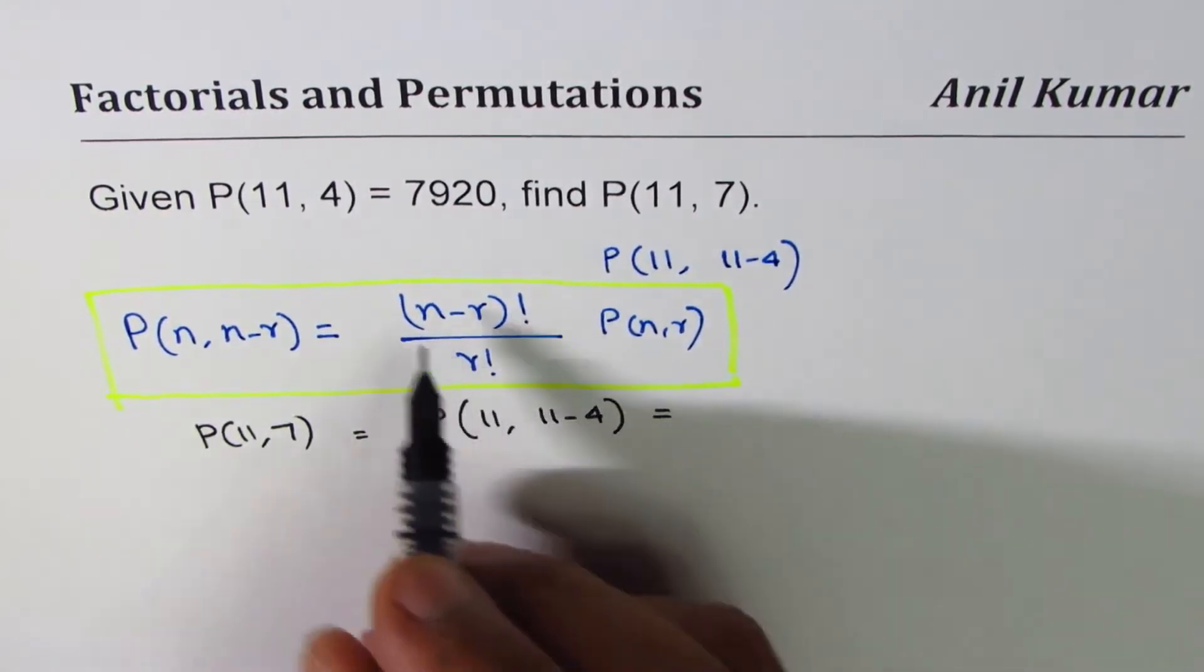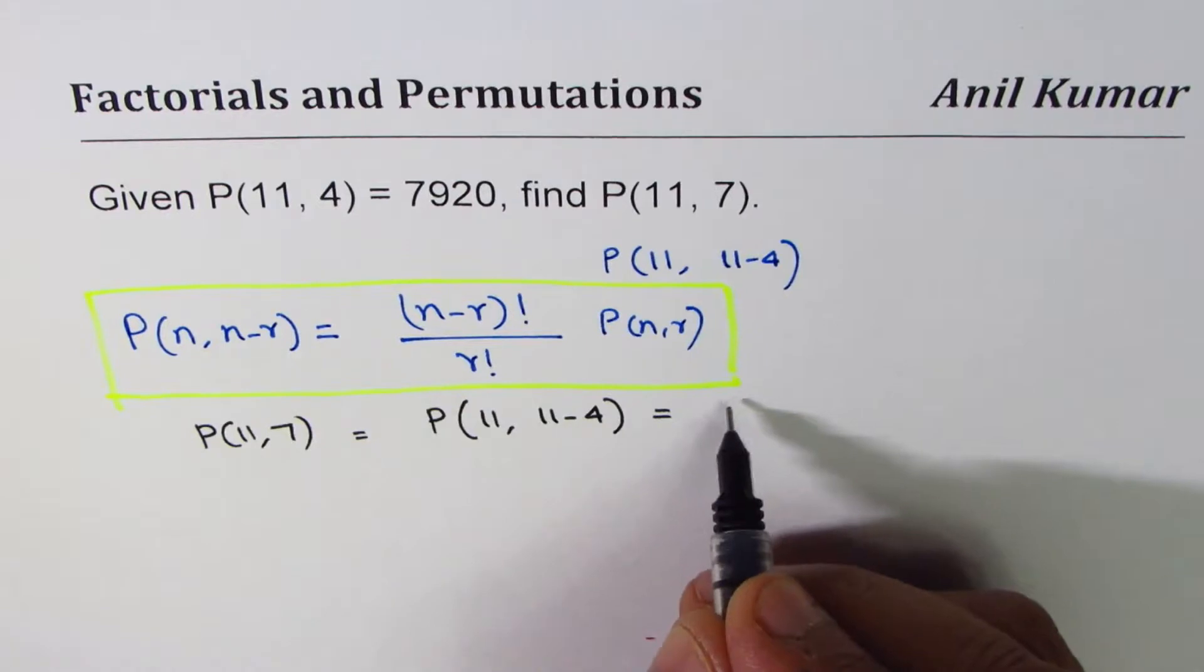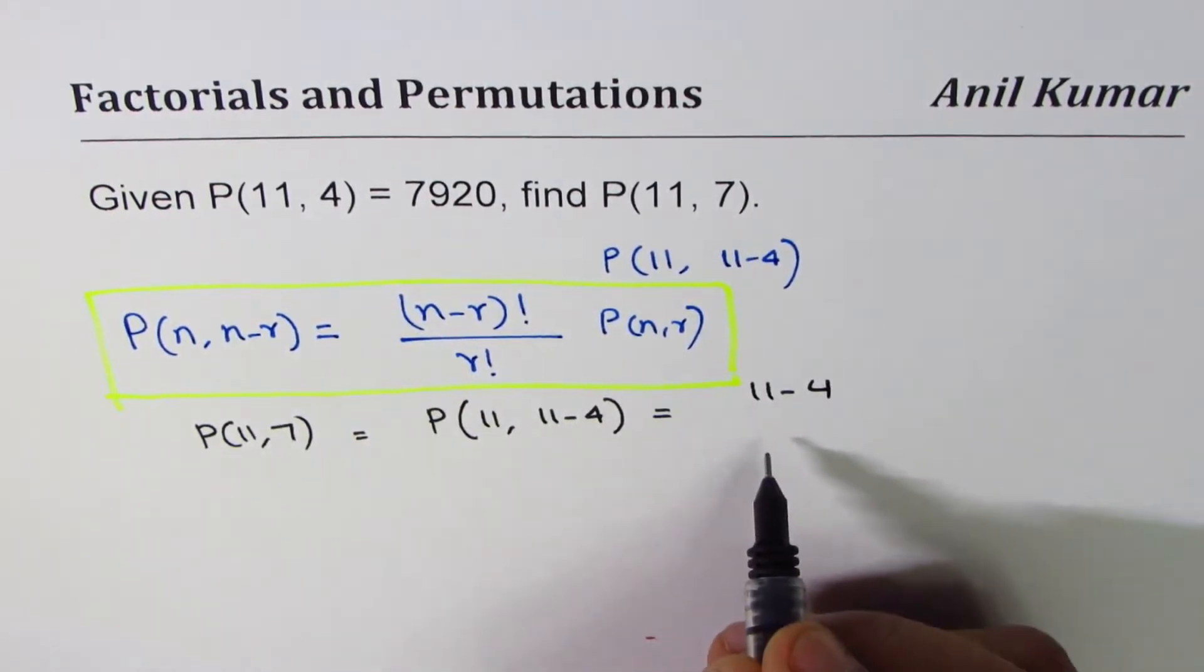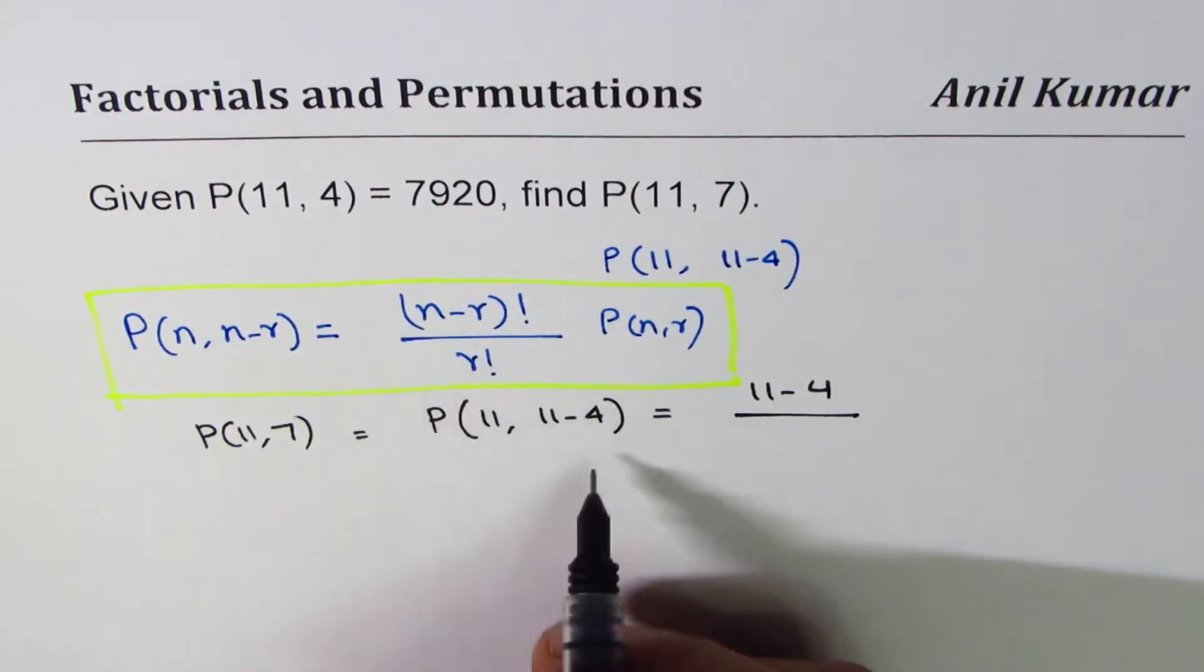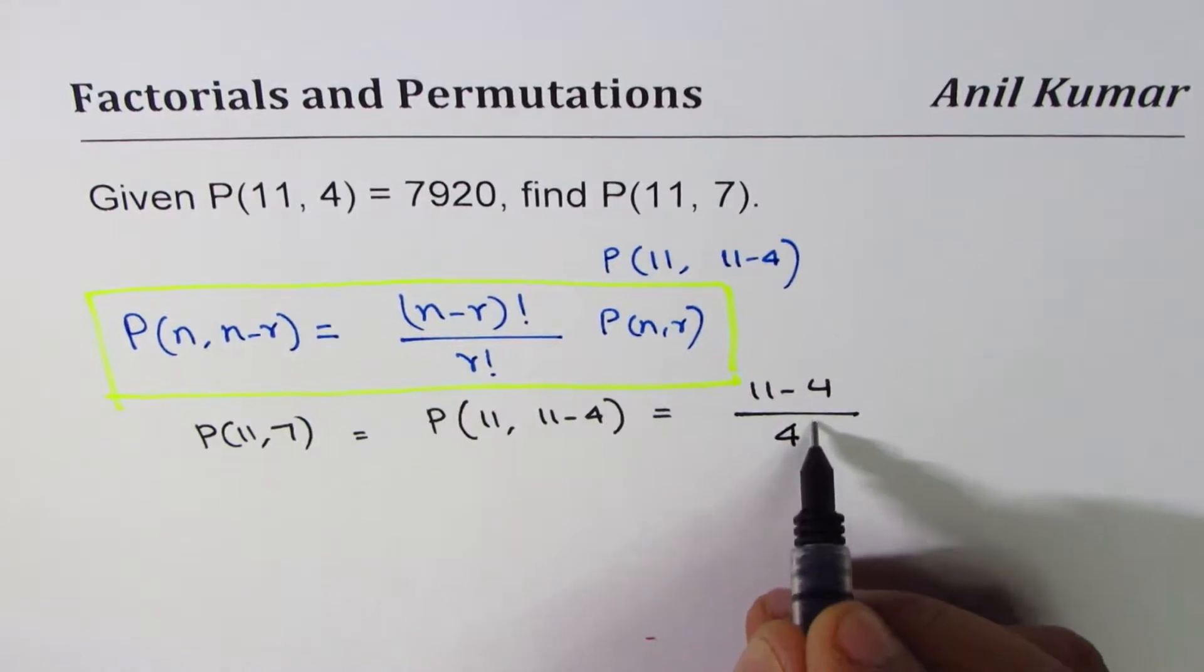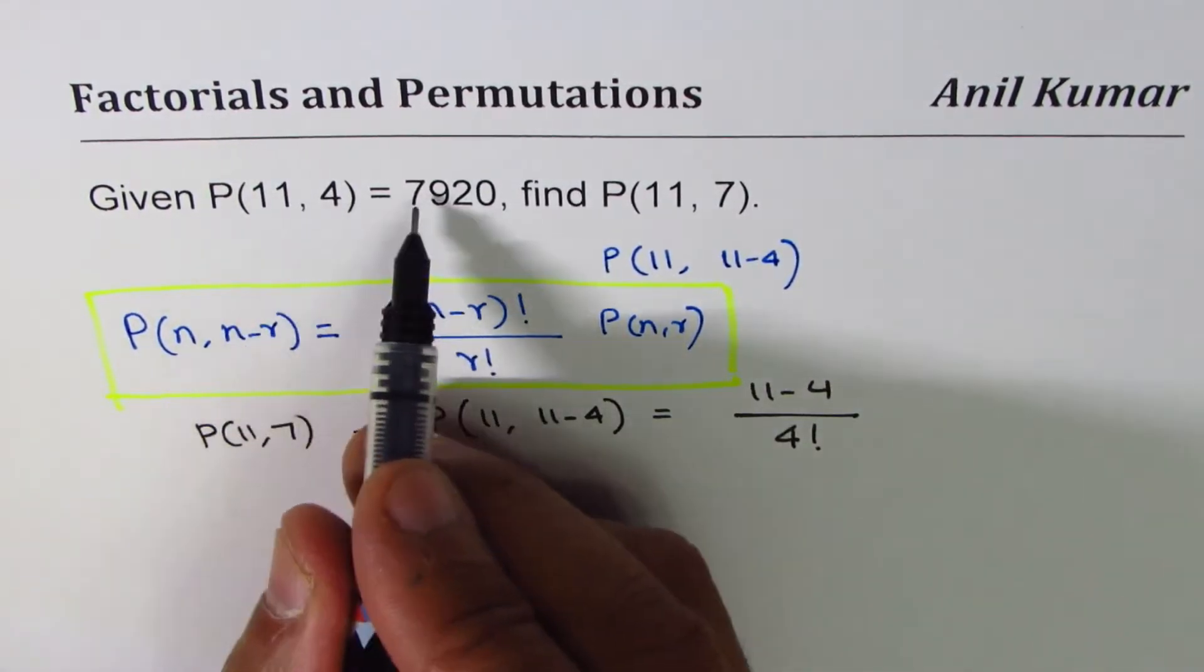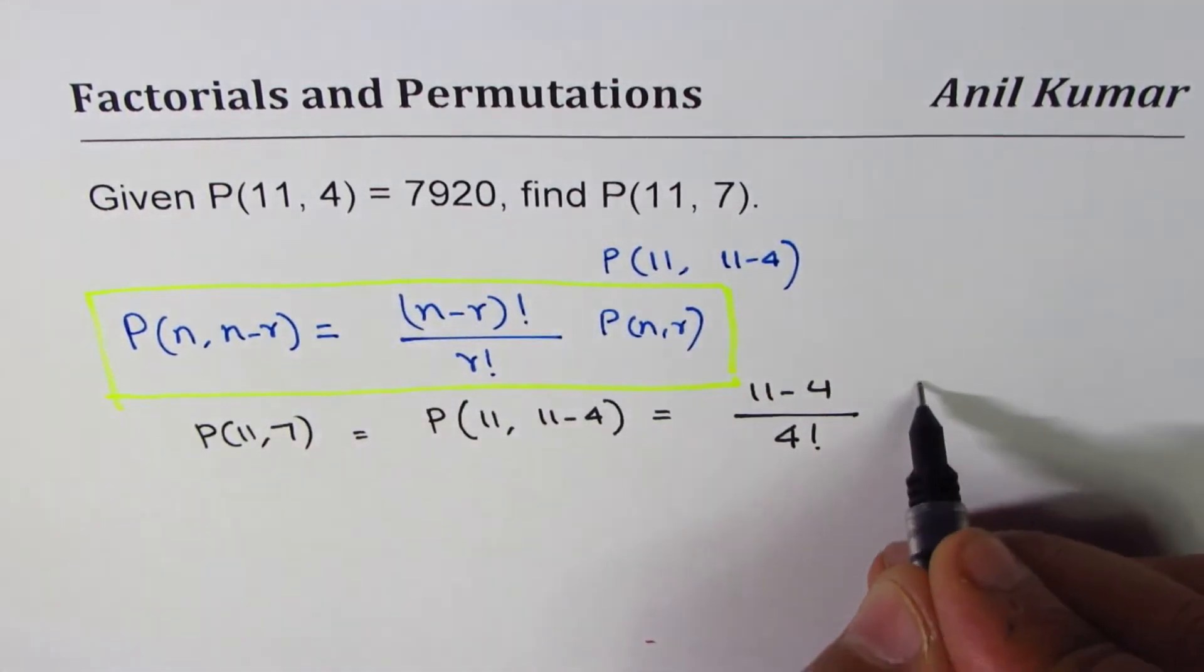So we have the numerator as (11-4)! divided by r factorial. r is 4, right, 4 factorial times P(n,r) which is P(11,4) is given to us as 7920.